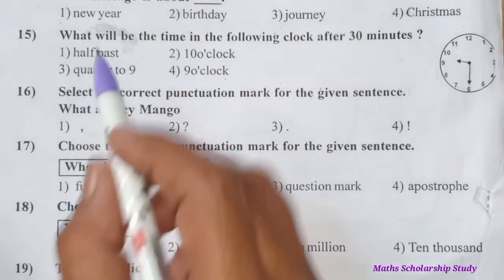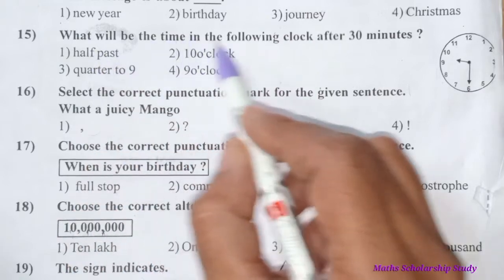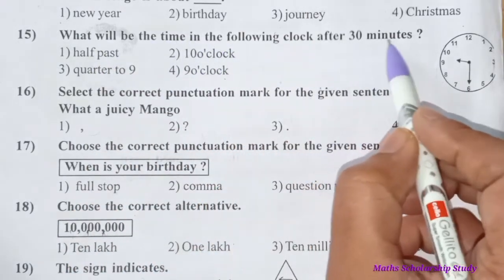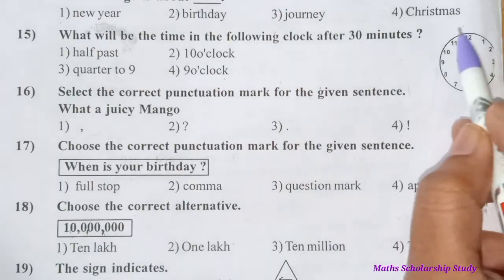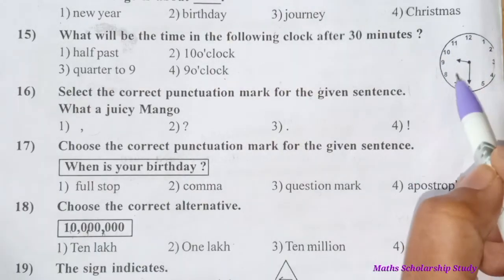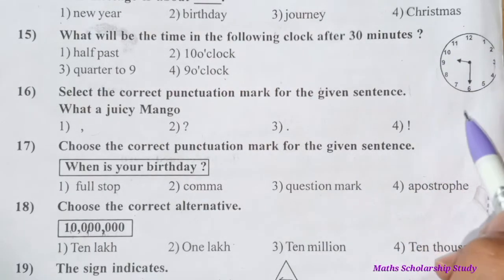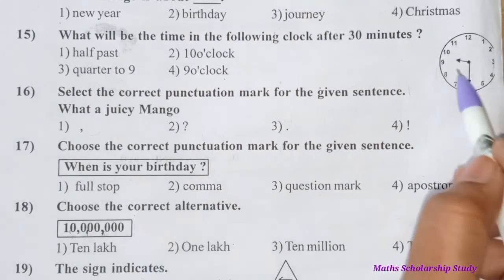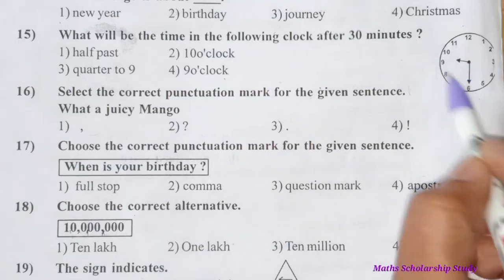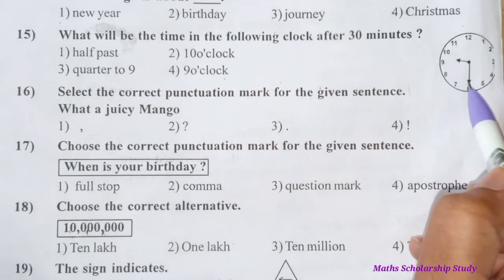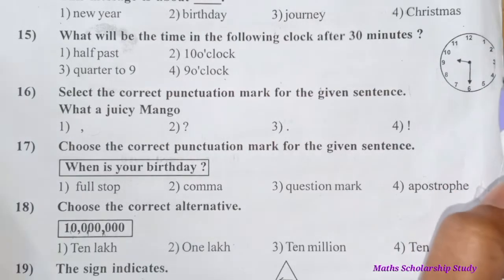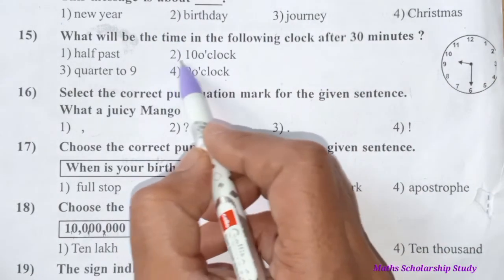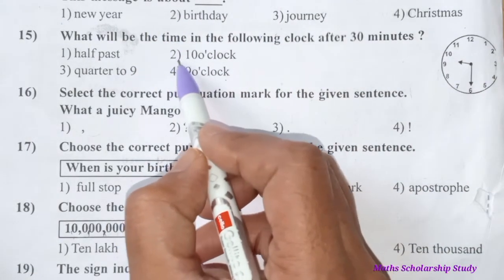Question number fifteen: What will be the time in the following clock after thirty minutes? The clock shown reads half past nine (9:30). After thirty minutes the clock will show ten o'clock. The correct option is ten o'clock — option number two.